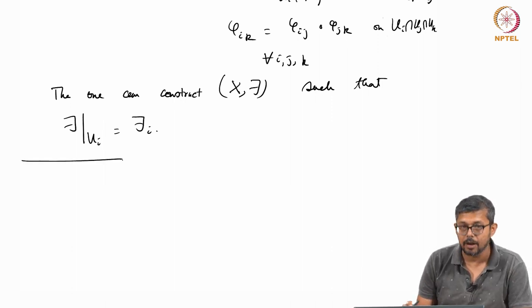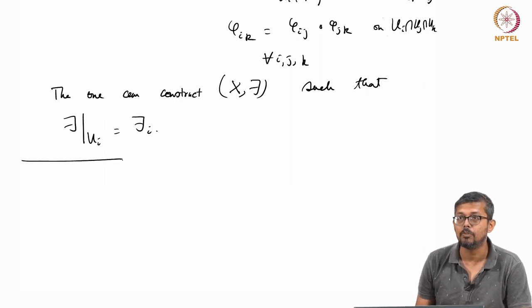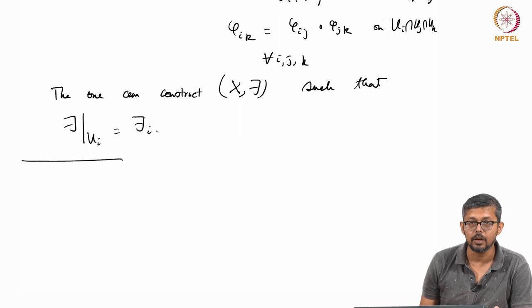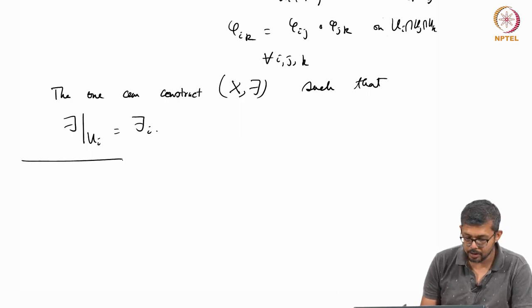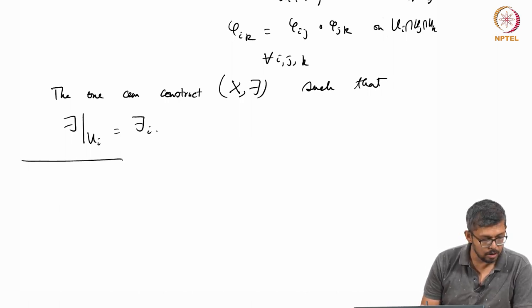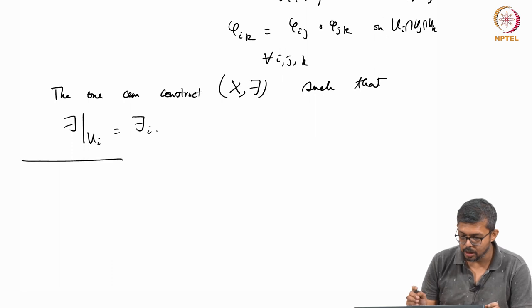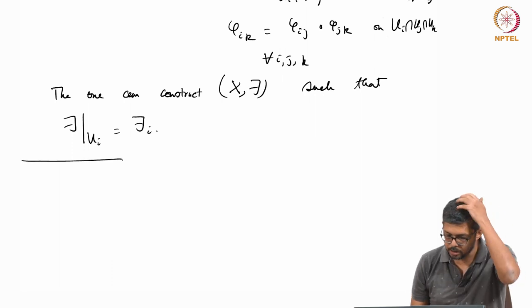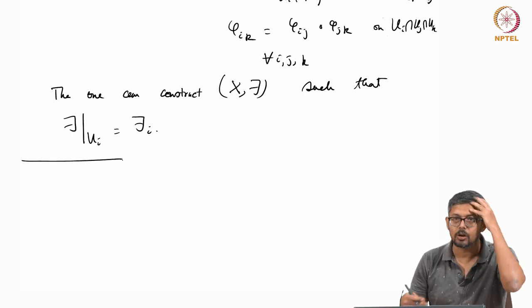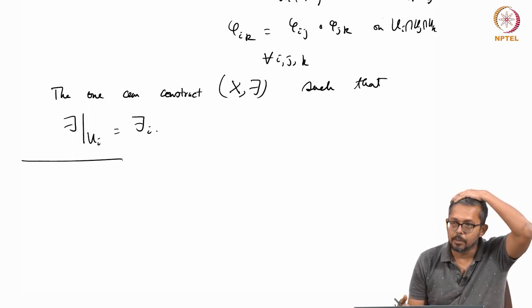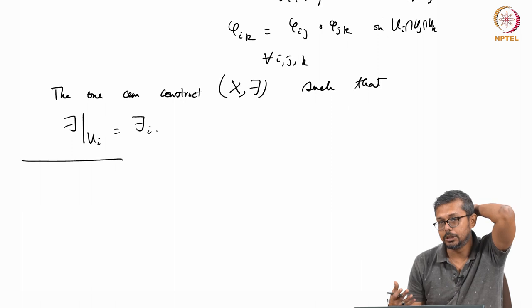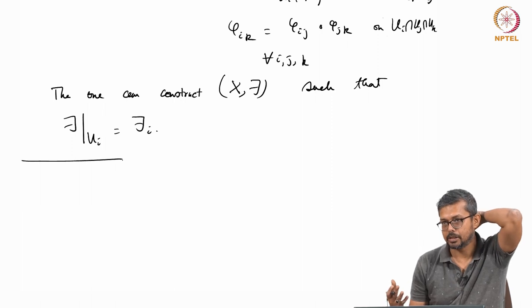Now I will quickly define what is called a Kp variety. Mostly I was talking about sheaves of Abelian groups, but you can also talk about sheaves of sets - for example, a sheaf of K-valued functions.